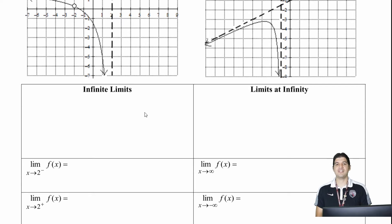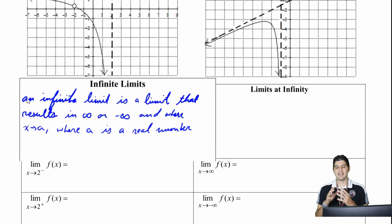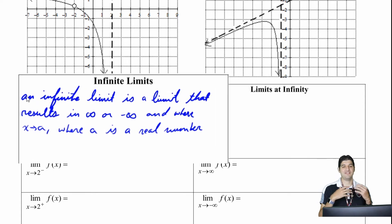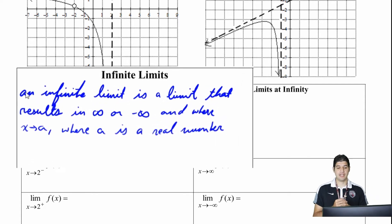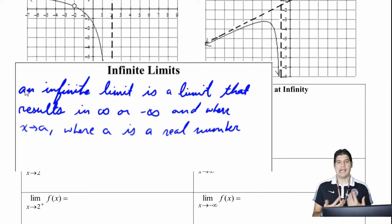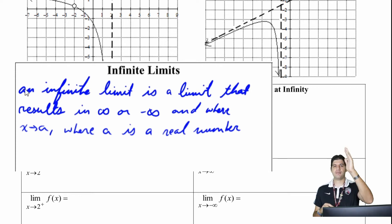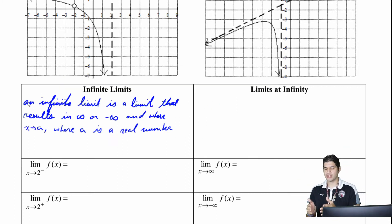What is an infinite limit? An infinite limit is a limit that results in infinity or negative infinity, where x equals a, and a can be any real number. So what you want to think about is at a value, the graph is either going straight up or straight down. So let's look at these couple examples here.